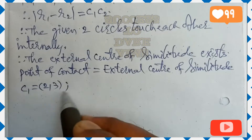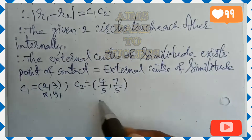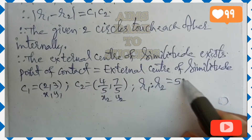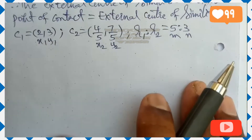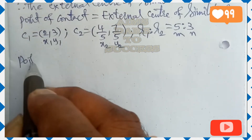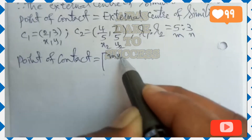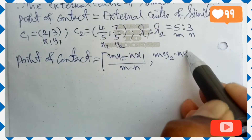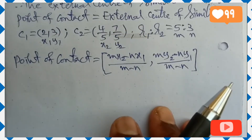C₁ = (2, 3) is (x₁, y₁), C₂ = (4/5, 7/5) is (x₂, y₂), and r₁ : r₂ = 5 : 3, so m = 5, n = 3. The point of contact (external center of similitude) formula is: ((mx₂ − nx₁)/(m − n), (my₂ − ny₁)/(m − n)).